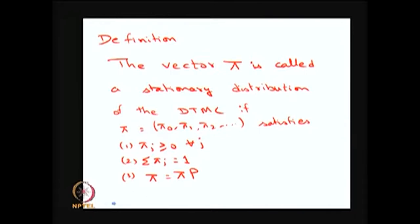Any vector pi satisfying these three conditions is called a stationary distribution. This is not the same as the limiting distribution discussed earlier, but for an irreducible aperiodic Markov chain, the limiting distribution is the same as the stationary distribution, which is also the same as the equilibrium or steady-state distribution. All three distributions are the same for an irreducible aperiodic Markov chain, but in general all three can be different.